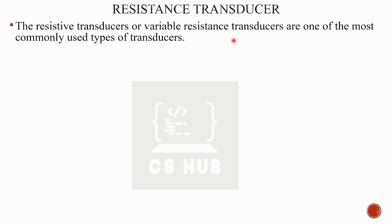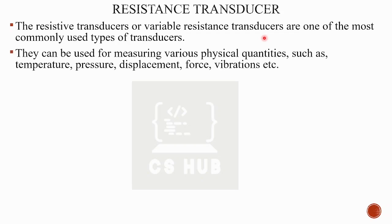Another name is variable resistance transducers. This can be used for measuring various physical quantities like temperature, pressure, displacement, force, and vibrations. These physical quantities are difficult to measure directly, so we use resistance transducers.